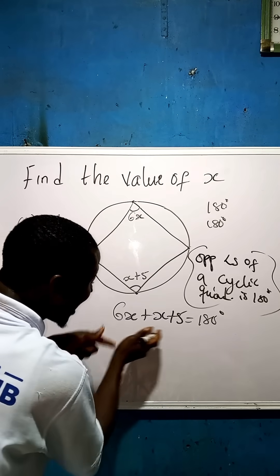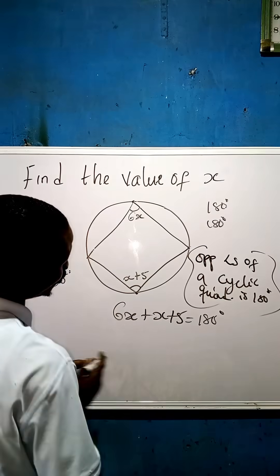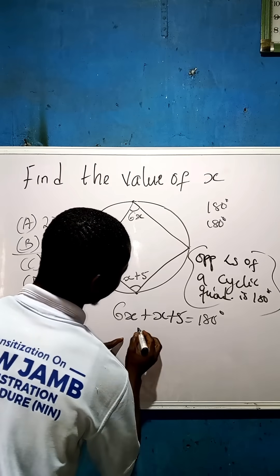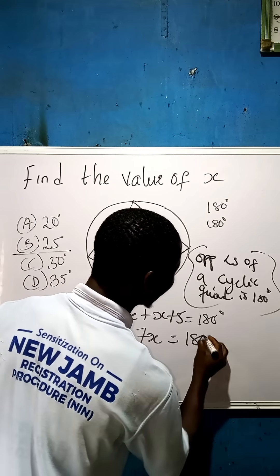Now, we sum up our like terms, so that this number we go and meet this number. This alphabet, we add up to this one. We are going to have 6x plus x gives us 7x plus 5 equal to 180 degrees.